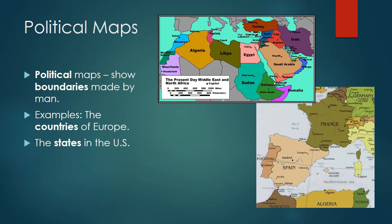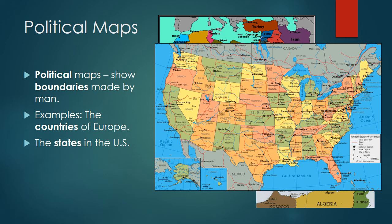A political map shows boundaries made by man. These particular maps show countries — different countries at the top of Africa and the Middle East, and then down at the bottom some countries in Europe. This also shows you state boundaries, and you can see that this political map shows that quite well with the different colors on it.